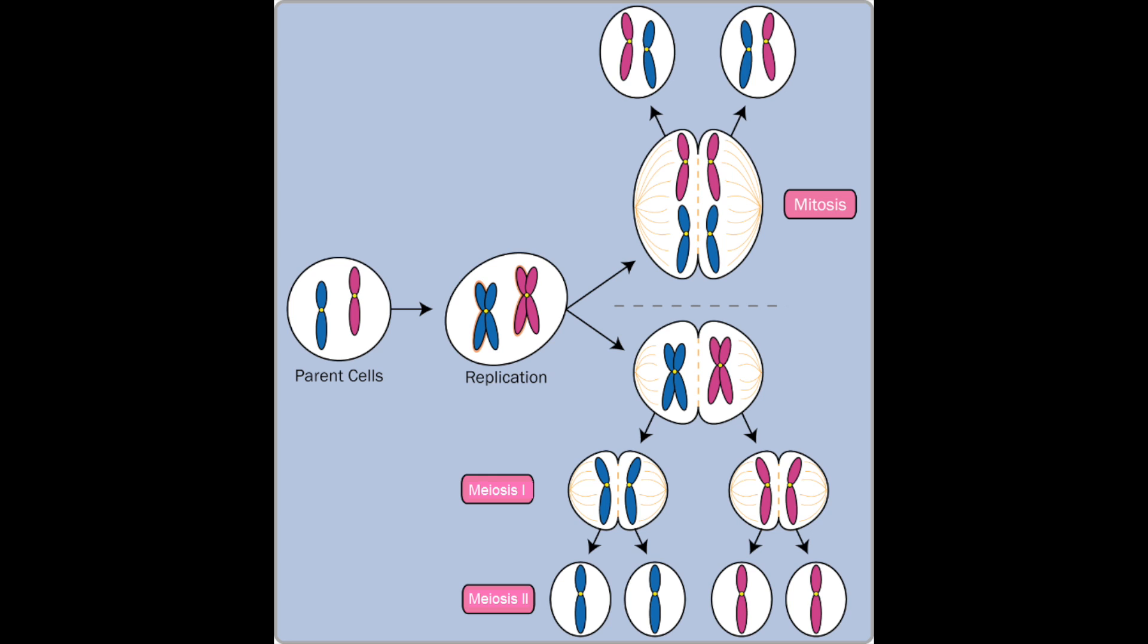Now we need to know about meiosis and this happens in our sex cells. Female gametes or ova are made in the ovaries and male gametes are made in the testes.